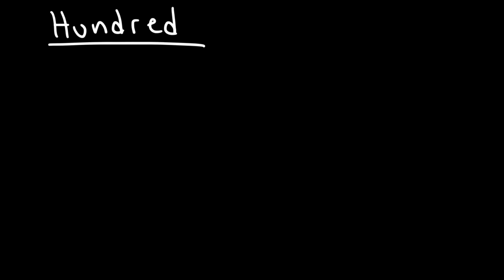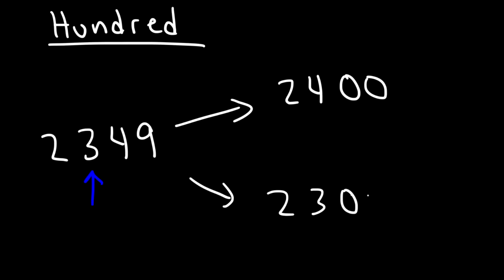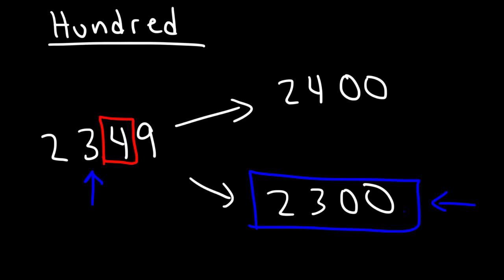Let's say we have the number 2,349. So this is the hundreds place. It's either going to go up to a four followed by two zeros, or go down to a three followed by two zeros. Looking at the next number — this is four or less, so we're going to round it down to 2,300. And that's the answer.